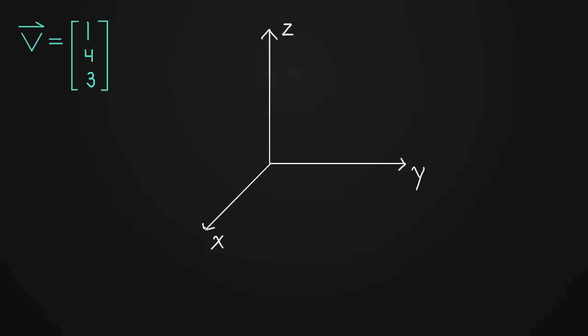Okay, so here we have a vector with three components. And now we can think of these as the x component and the y component just like before. And now we're adding in the z component.